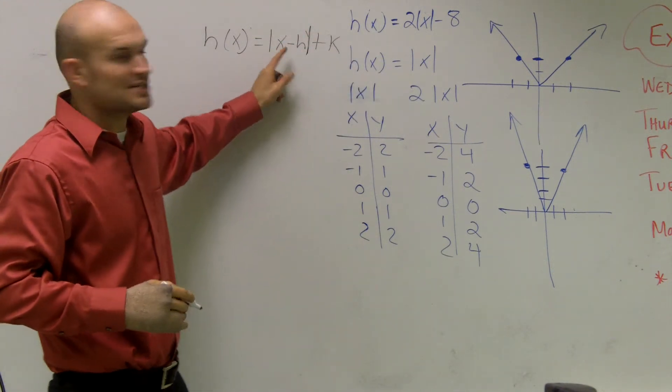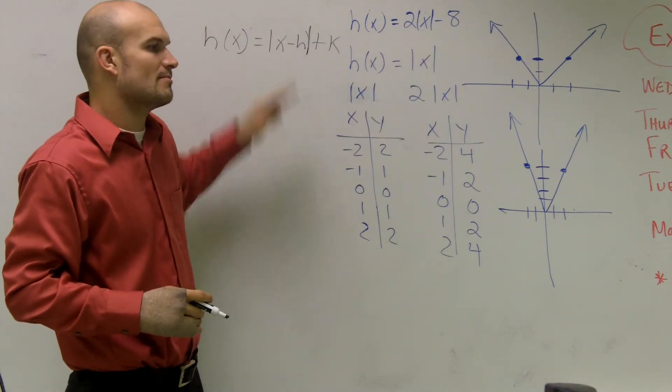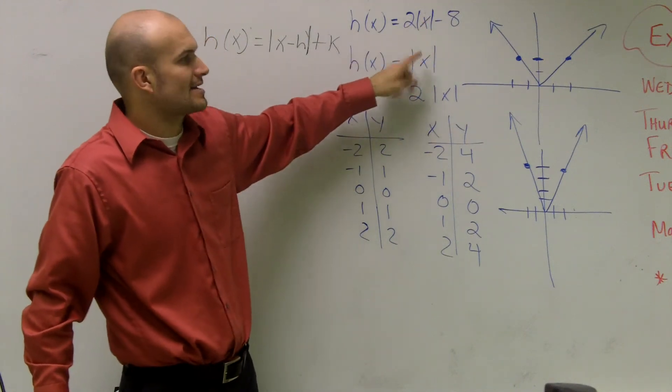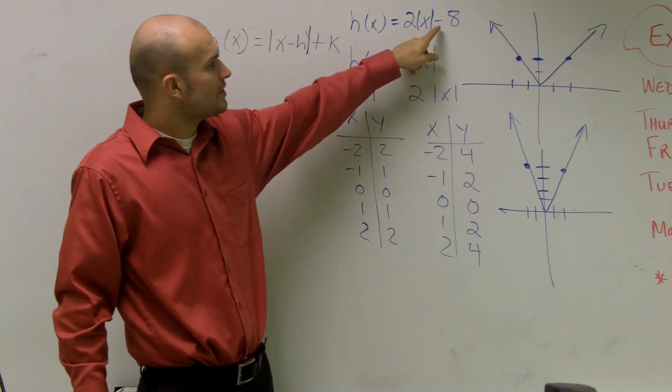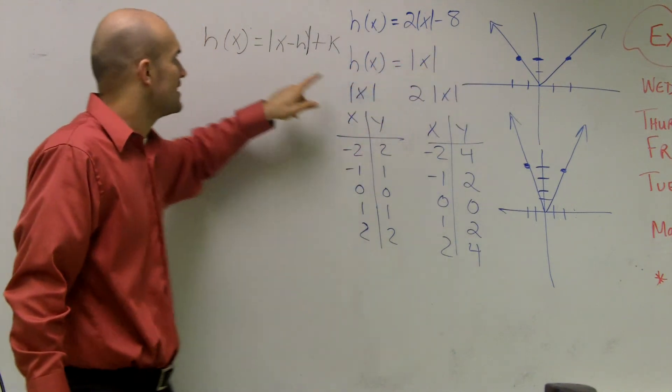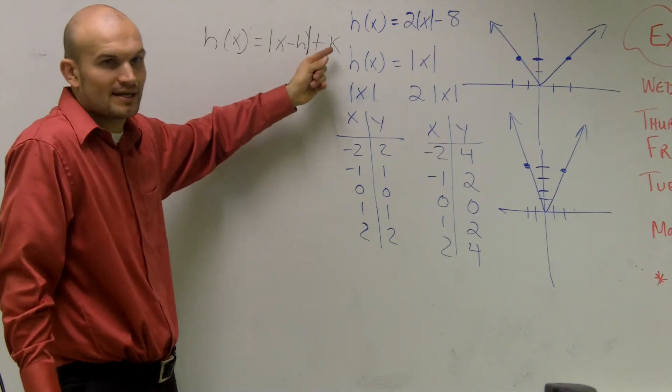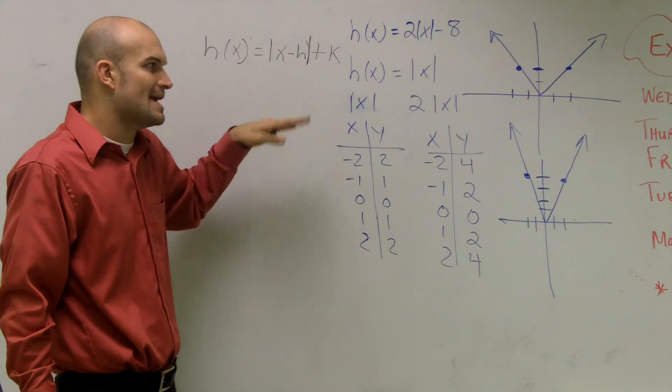Remember, x minus h is going to test my horizontal shift and k is going to determine my vertical shift. Well, here, I just have my absolute value of x. So I'm not going to be moving this graph horizontally at all. However, it has an x minus 8. And remember, that's the same thing as a negative, that'd be a negative 8, which would be like a negative k. That's going to tell me I'm going to have to shift my graph now 8 units down.